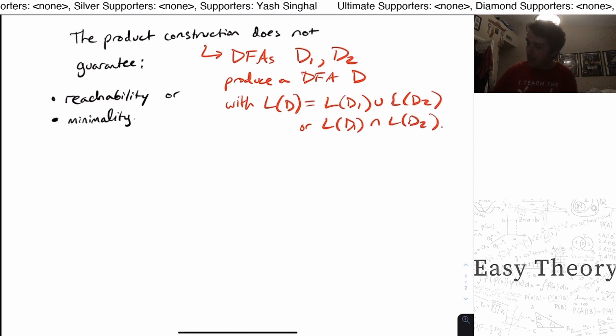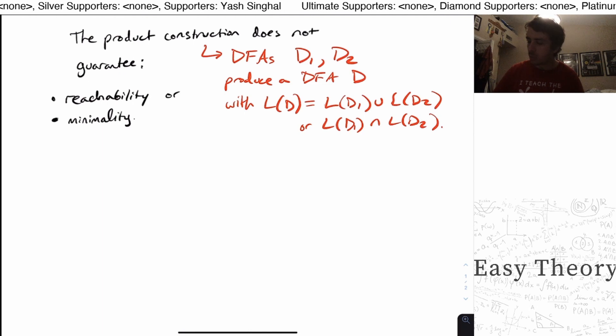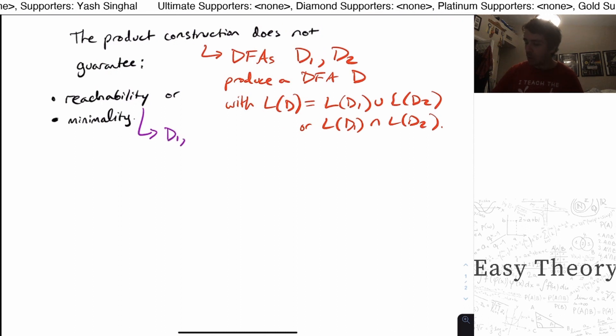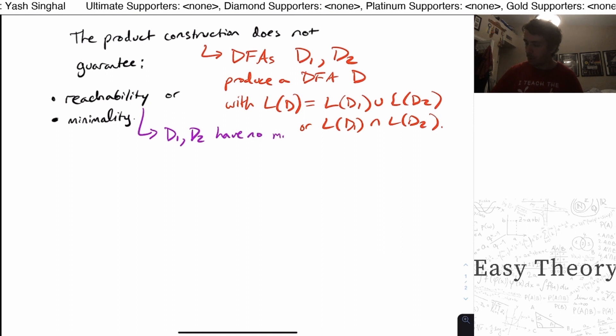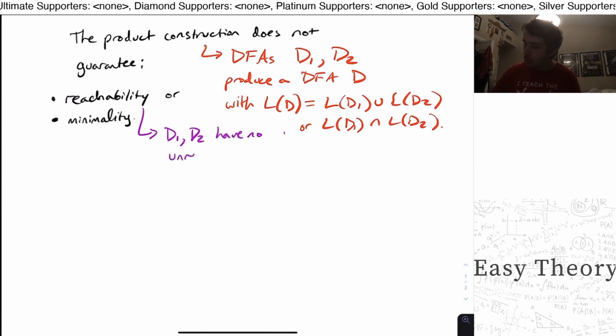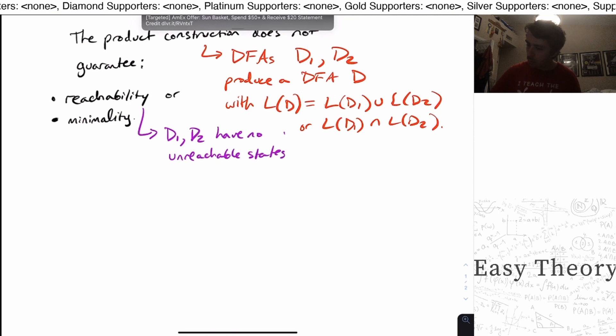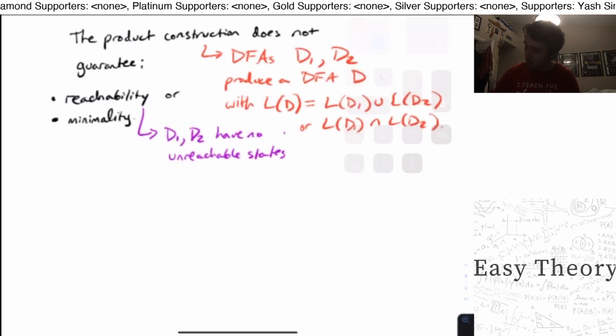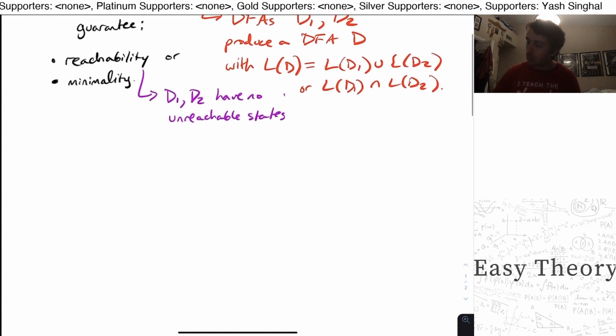So what do I mean by does not guarantee reachability or minimality? Let's address the first one first. What I mean by this, let's suppose that D1 and D2 have no unreachable states. And what do I mean by that?